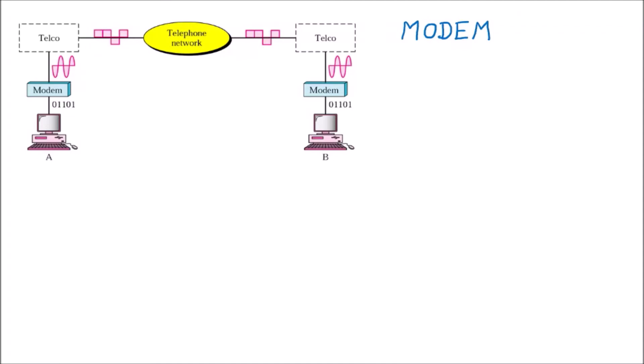We are starting the topic of modem. The modem is used in ancient times and today we may not use it commonly, but it is still a very important device. Modem is named from two things: 'mo' stands for modulator and 'dem' stands for demodulator. So a modem is a device which performs two functions: modulation and demodulation. Modulation means converting digital to analog, and demodulation means the reverse.